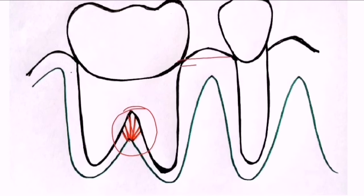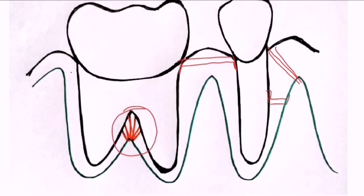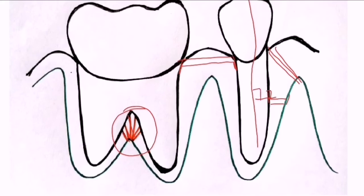To recap the six principal fiber groups: First, transseptal - no osseous attachment, extending from cementum of one tooth to the cementum of the adjacent tooth. Second, alveolar crest group - from cementum to the alveolar crest. Third, horizontal fibers - extending horizontally from cementum to alveolar bone, perpendicular at 90 degrees to the long axis. Fourth, oblique fibers - from cementum to alveolar bone coronally and obliquely. Fifth, apical fibers - at the apical portion. Sixth, interradicular fibers.